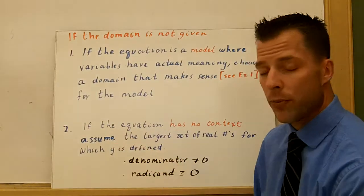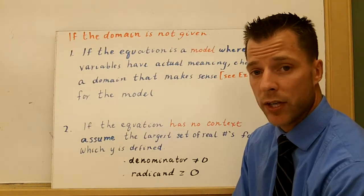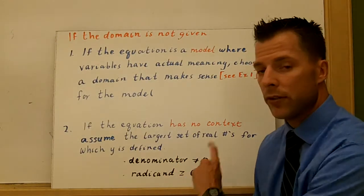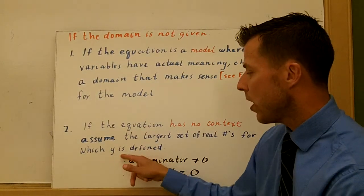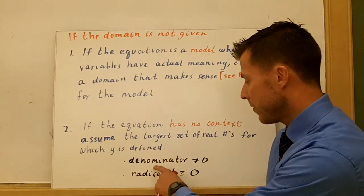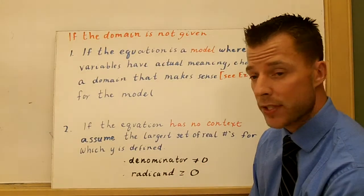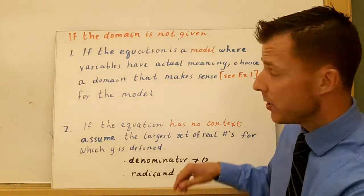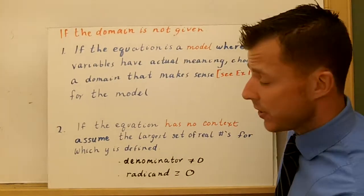Number two, if the problem has no context, maybe you're given a linear equation, then you're going to take the largest set of real numbers for which y is defined. And there's two things you have to be careful of. You have to be careful that if you have a denominator, the denominator can't be zero, and the radicand will have to be greater than or equal to zero. So square roots and things like that.